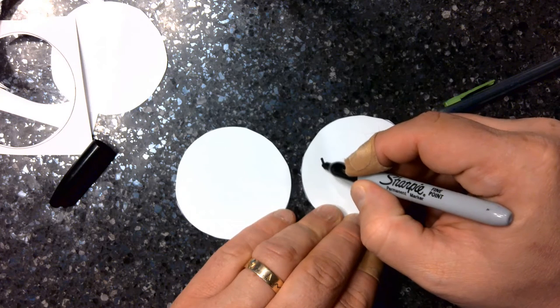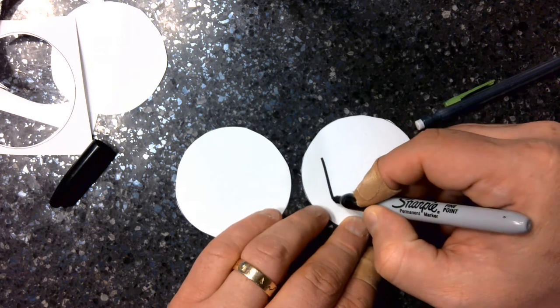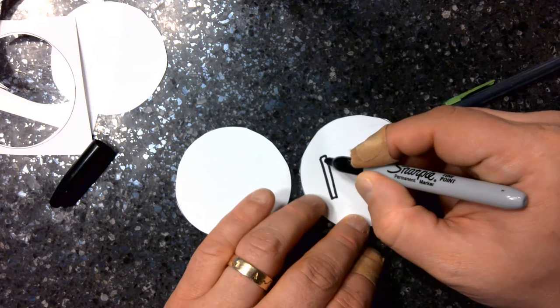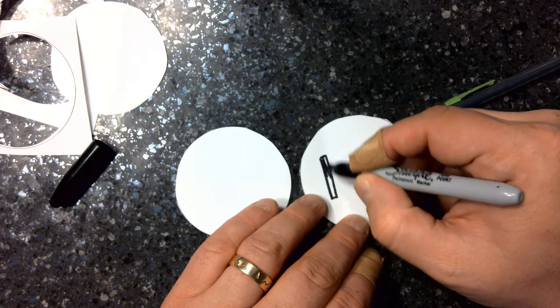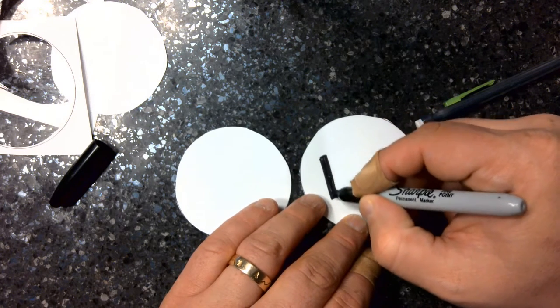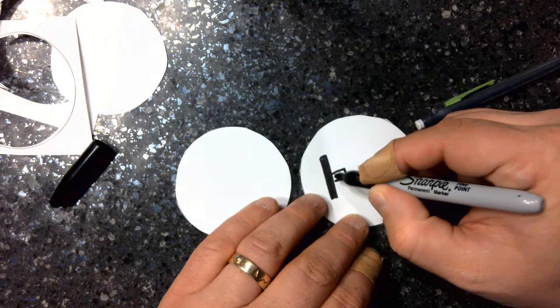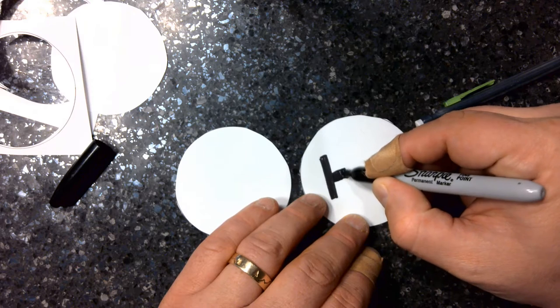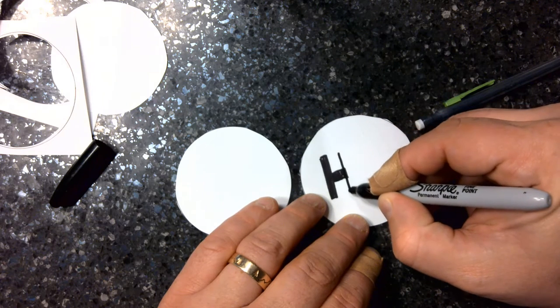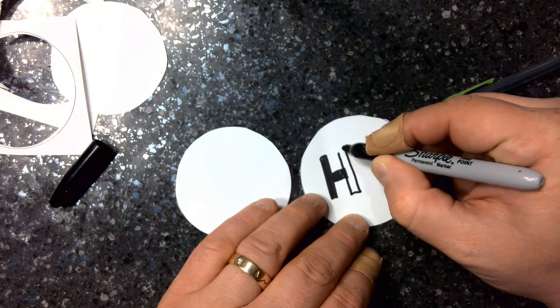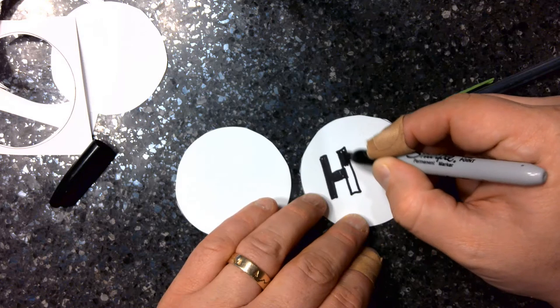A Thaumatrope works by using persistence of vision to make it so that it looks like an image is there when it actually isn't. So I'm going to write the word hi but not put both letters on the same piece.